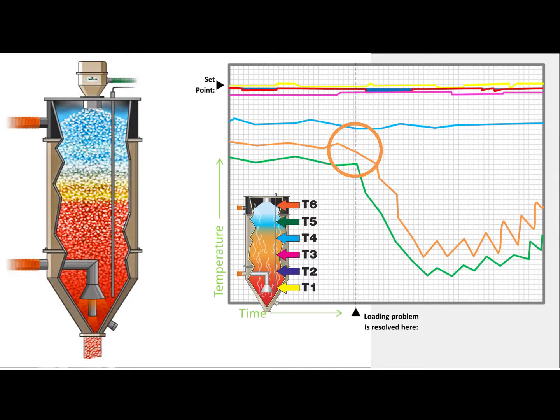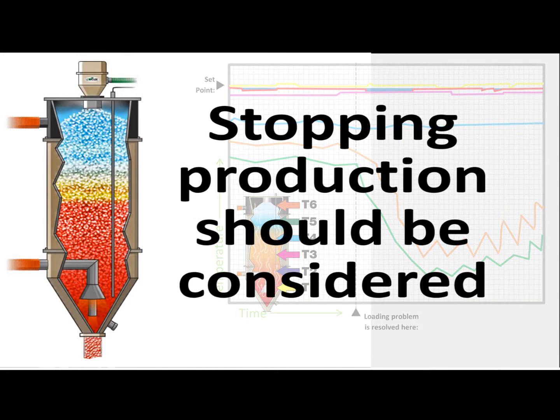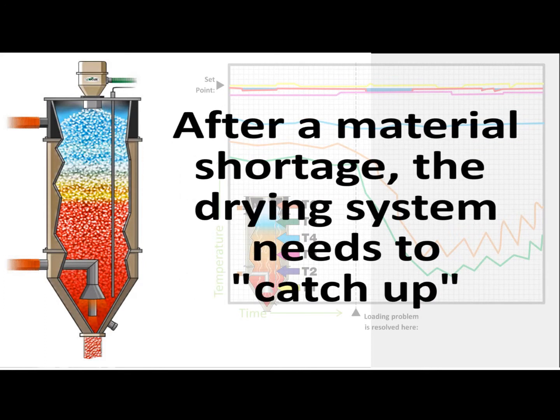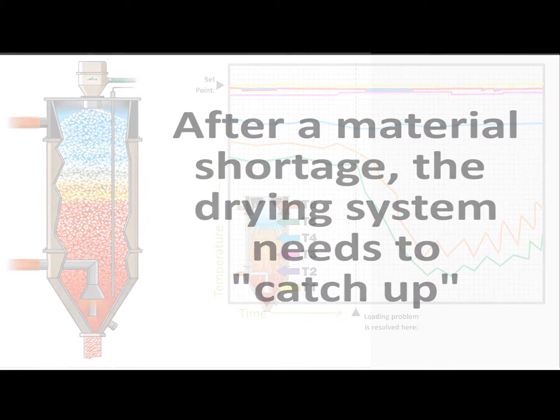This initial drop can be compared to a cold front of material moving down through the hopper that has not had full exposure to drying. These temperatures will eventually rise and realign into a normal temperature profile as drying stabilizes, but halting of the process should be considered to prevent the production of insufficiently dried product. After a material shortage, the drying system needs to catch up and deliver proper residence time to the new material.